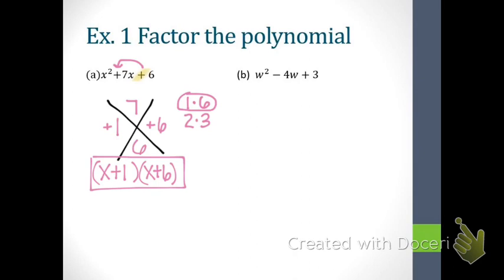Let's look at letter B. What type of polynomial? Trinomial. Leading coefficient? 1. So we drop our X and figure out our signs. What are we supposed to look at first? The second sign — highlight it. The sign is positive, so our signs will be the same. Draw an arrow back to the first sign. This time our signs will both be negative. So we fill in a negative on either side of the X. What drops to the top of the X? The coefficient of W — it's not X this time, it's W. The coefficient is negative 4.